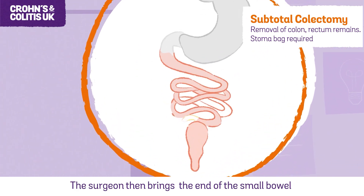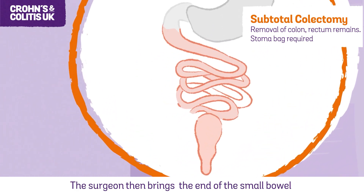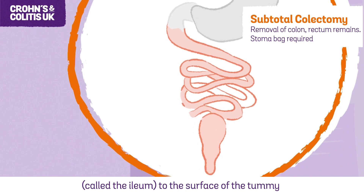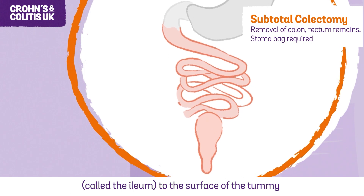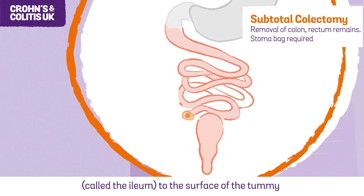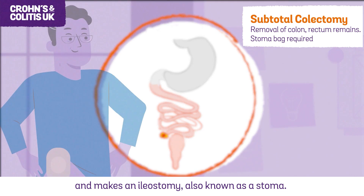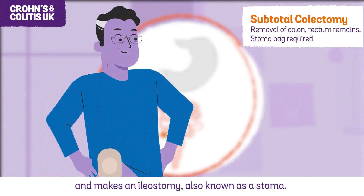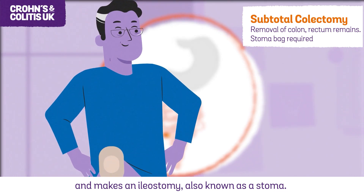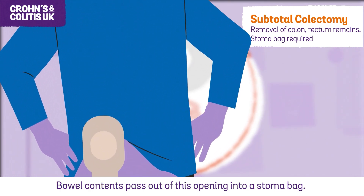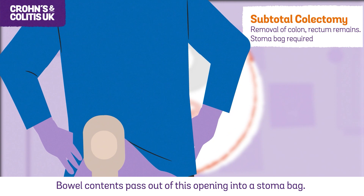The surgeon then brings the end of the small bowel, called the ileum, to the surface of the tummy and makes an ileostomy, also known as a stoma. Bowel contents pass out of this opening into a stoma bag.